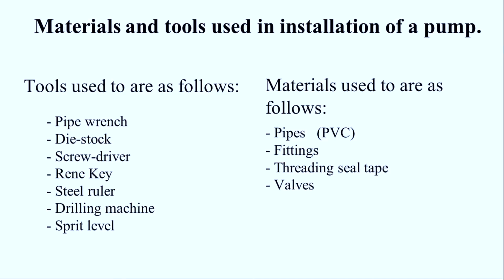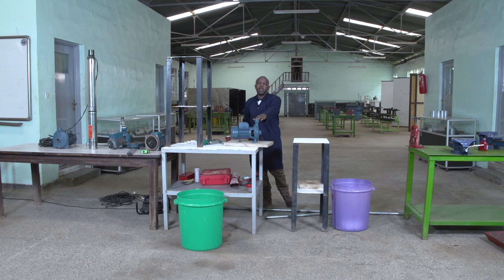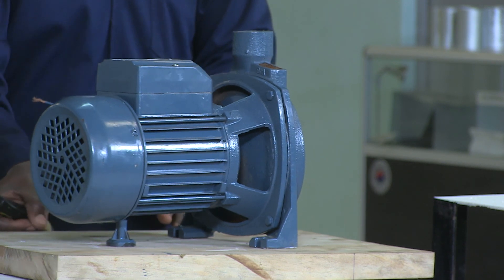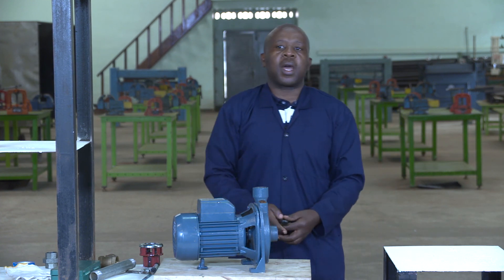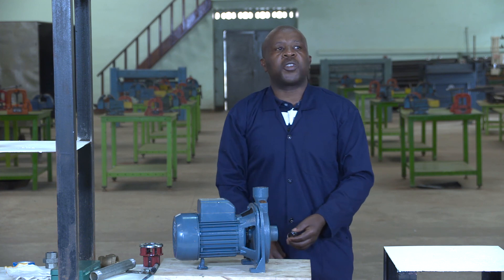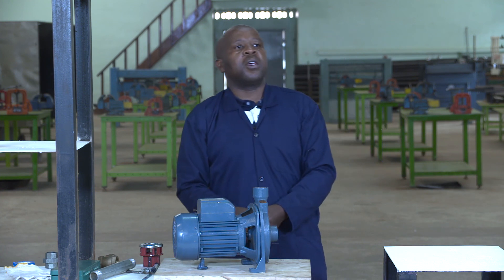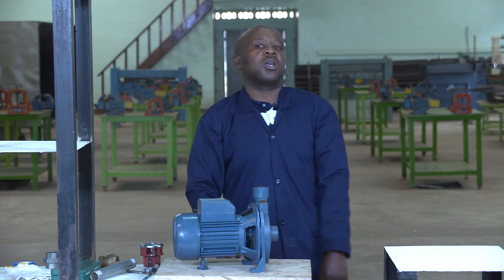When you go to the installation, we use many tools and many materials — like a pipe wrench, die stock, and so on. As of today, we use galvanized pipe, because we have to know the connection of the pump using galvanized pipe. Dear learners, for today we can end here in this section. Then after, we will come to the section of pump installation practically. This was the introduction to this kind of pump and how we are going to install it. Thank you.